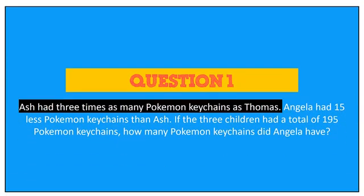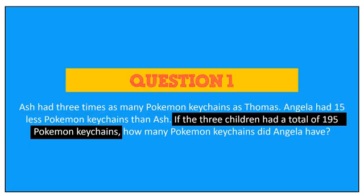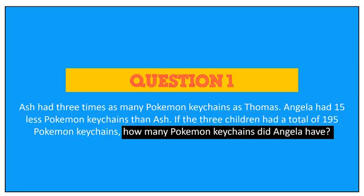Ash bought three times as many Pokemon keychains as Thomas. Angela bought 15 less Pokemon keychains than Ash. If the three children had a total of 195 Pokemon keychains, how many Pokemon keychains did Angela have?